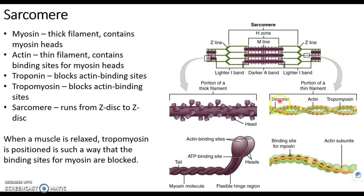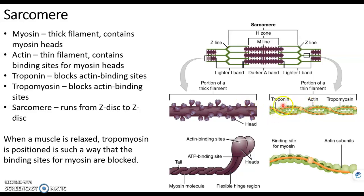They can't fit inside right now because those openings or active sites are blocked. We have proteins that you can see in orange and these little yellow balls here. Those proteins act to block the myosin heads from joining onto actin. This is so our muscles aren't always contracted. Myosin cannot bind to actin because of these two proteins that are blocking the active sites.